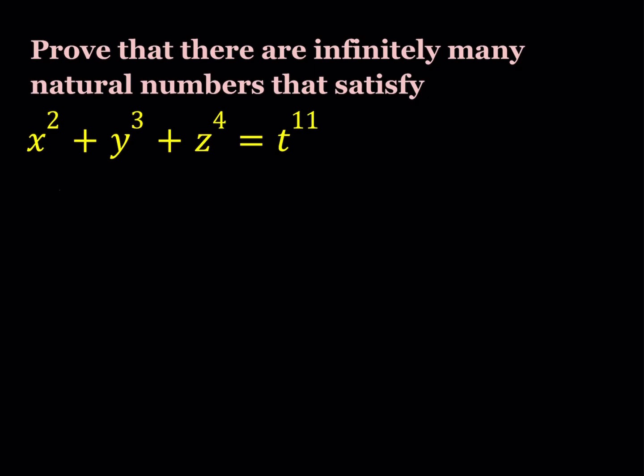Here's how we can proceed. I'm going to assume that x can be written as 3 to the power k, y can be written as 3 to the power m, z can be written as 3 to the power p, and t can be written as 3 to the power s, where these are going to be positive integers.